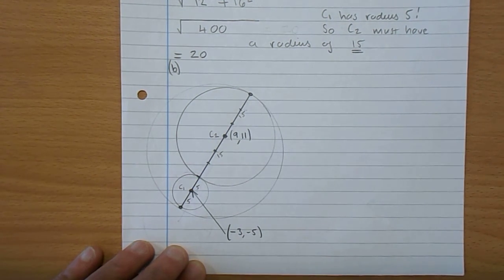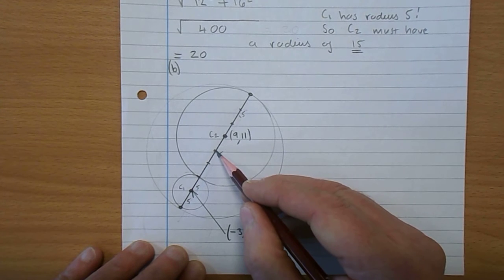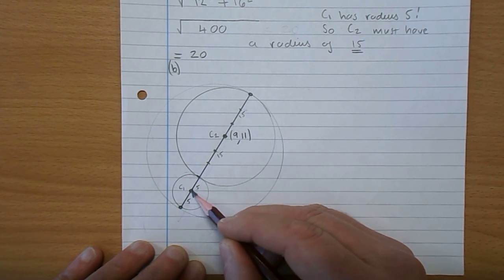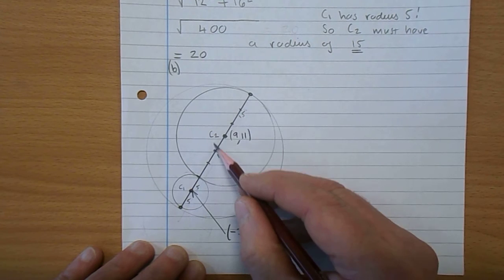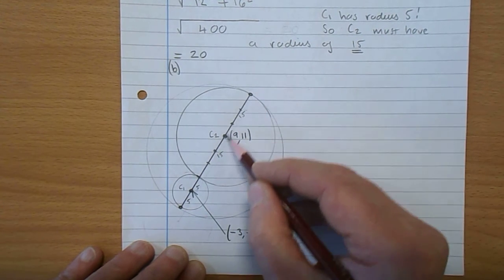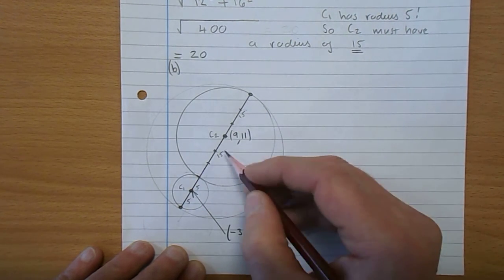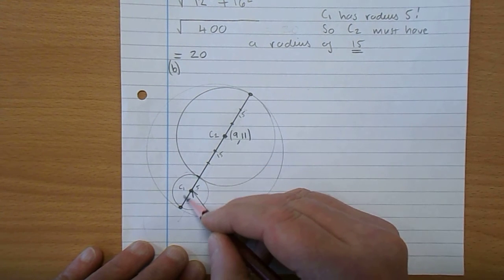The centre of C3 is, of course, in the middle. So how many? 1, 2, 3, 4, 5, 6, 7, 8.